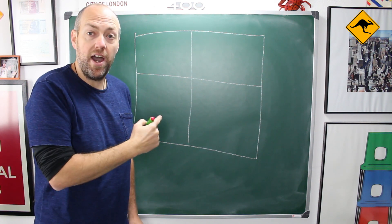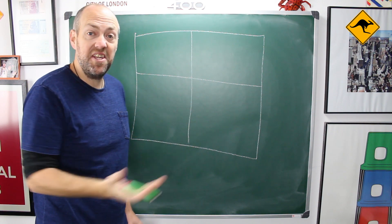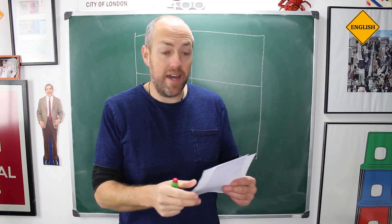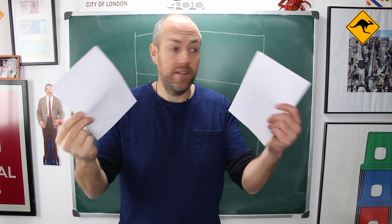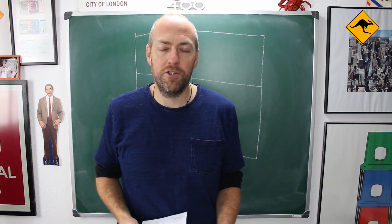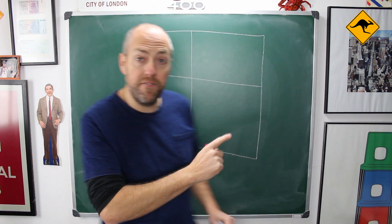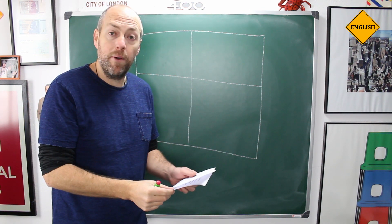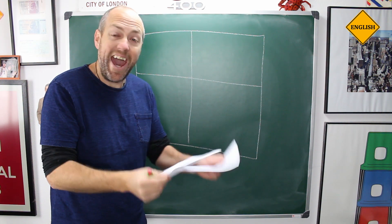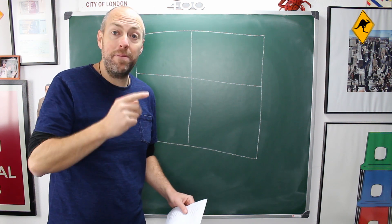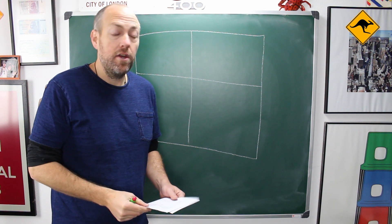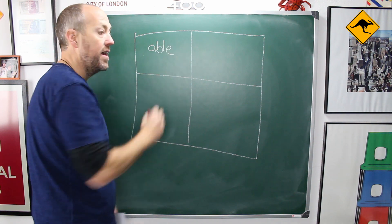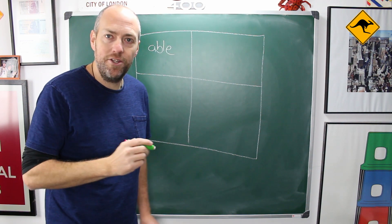That's why it's called the Johari window — because it looks a little bit like a window. Now, the fun part. We are going to start transferring the two lists of adjectives into the window. In the first box, we're going to write the adjectives that are both on your list and on your friend's list. So maybe you and your friend both agree that you are able, and you also agree that you are energetic.